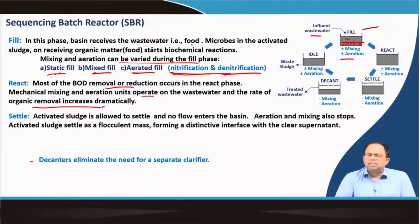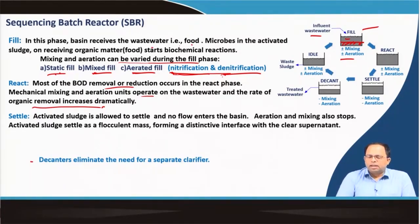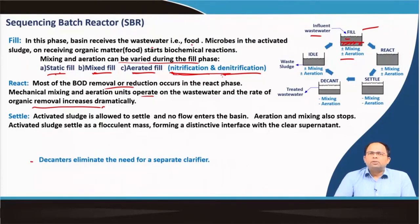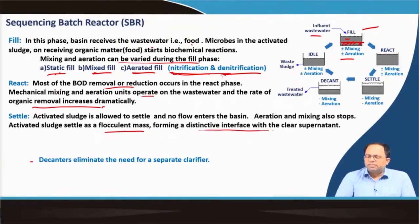Once the react phase is completed and most of the organic matter has been consumed, we have the settle phase where activated sludge is allowed to settle and no further wastewater is allowed to enter the basin. With no mixing and no aeration, the sludge floc settles as a flocculant mass, forming a distinct interface with the clear supernatant — you can see the gray matter gradually settling down with clear liquid at the top.